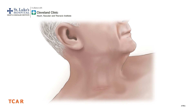Having successfully treated the lesion with the stent in combination with flow reversal, the arterial and venous sheaths are removed, and the incision is closed with absorbable sutures placed just underneath the skin.